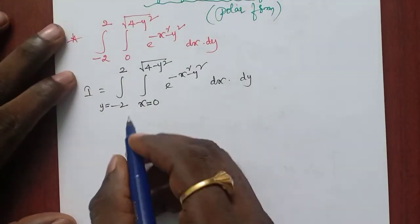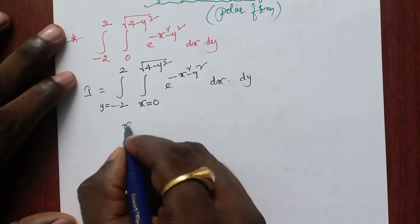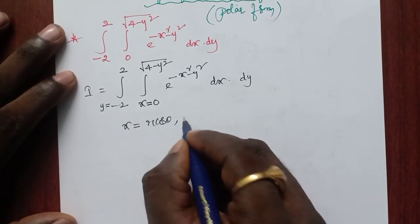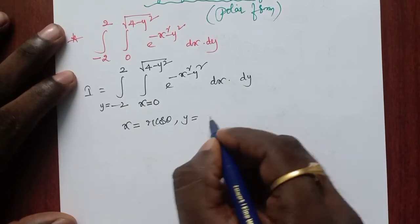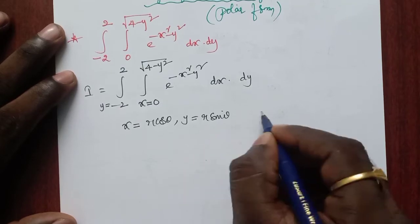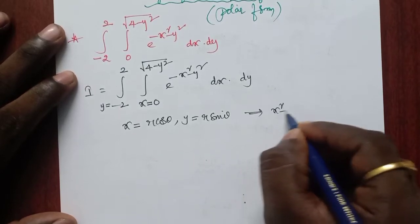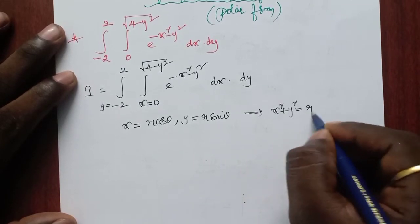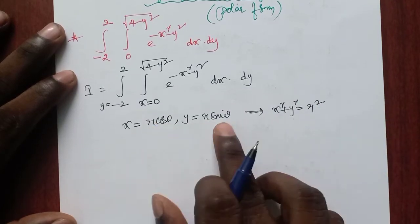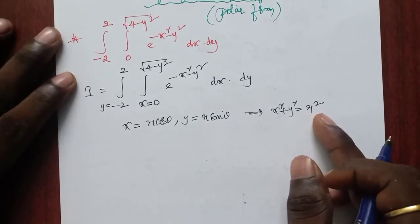Now, coming to the polar form. Let us consider x equal to r cos theta, y equal to r sin theta. From this, x square plus y square equals r square cos square theta plus r square sin square theta, which is r square.